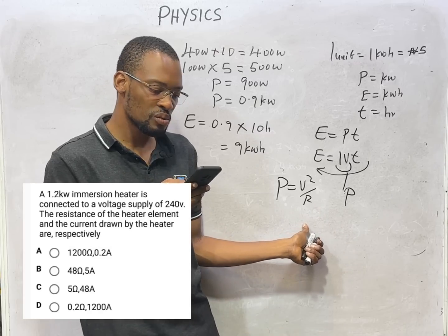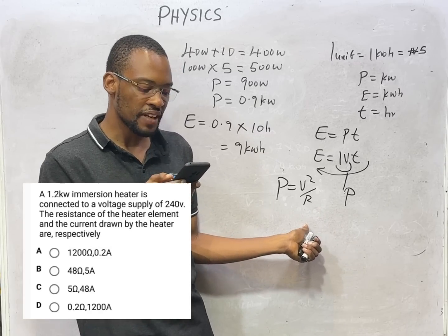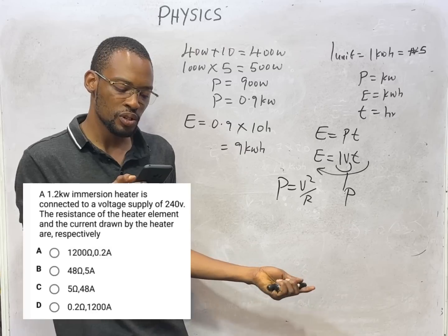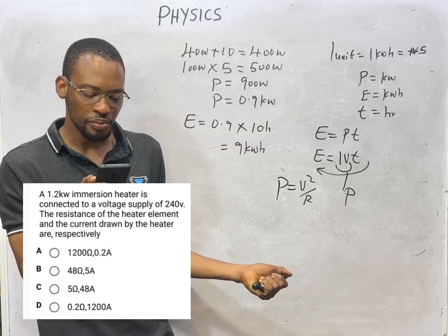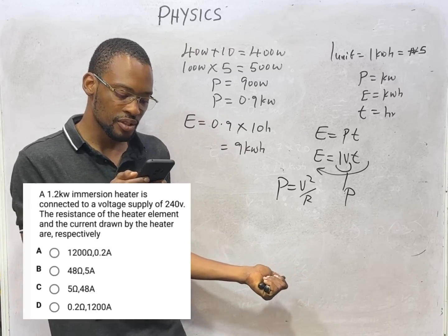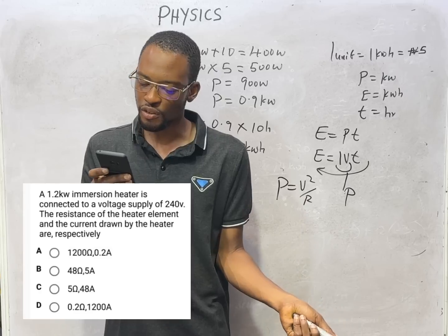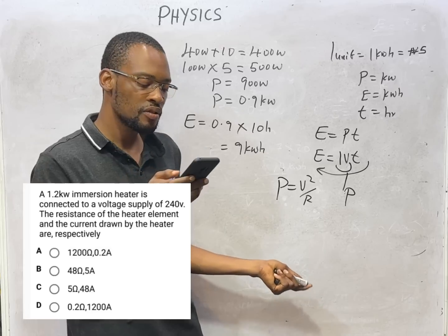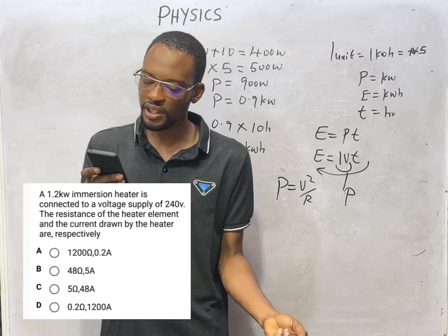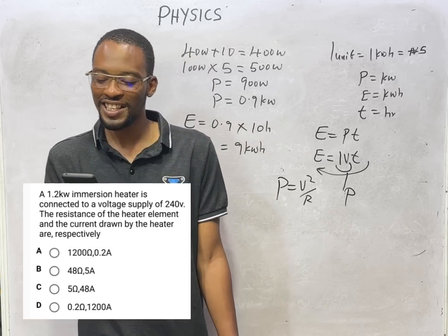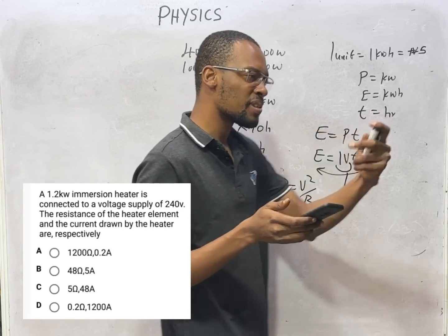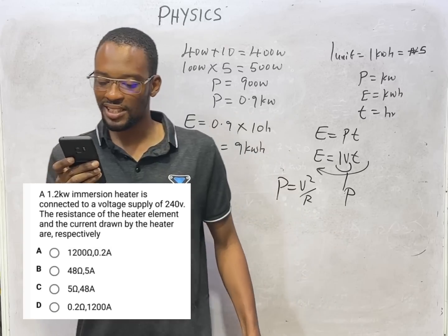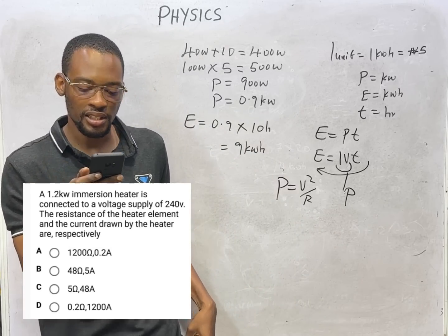To find the current, from Ohm's law V = IR. We have voltage = 240 volts and resistance = 48 ohms. So current will be voltage over resistance: 240 divided by 48. If you write them out and solve, you are going to get exactly the answer.